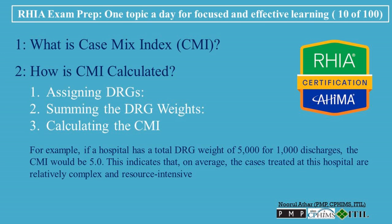For example, if a hospital has a total DRG weight of 5,000 for 1,000 discharges, the CMI would be 5.0. This indicates that, on average, the cases treated at this hospital are relatively complex and resource-intensive.